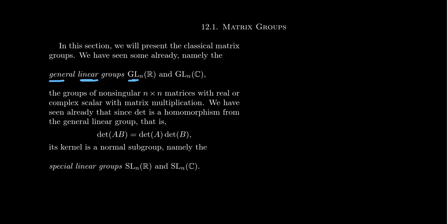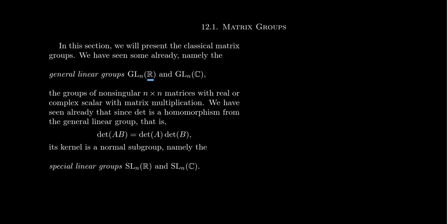There are other linear groups like the special linear group and other classical groups. The general linear group is all of them — we abbreviate it GL. The letter R suggests the type of scalars, the entries inside the matrix. The difference between GLN of R and GLN of C is that GLN of R has real scalars, while GLN of C has complex scalars inside the matrix.